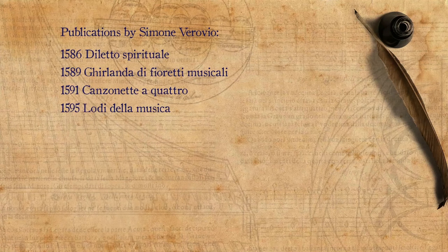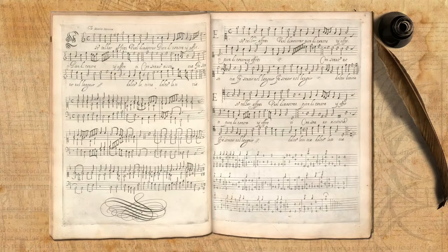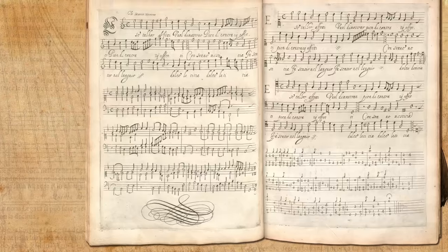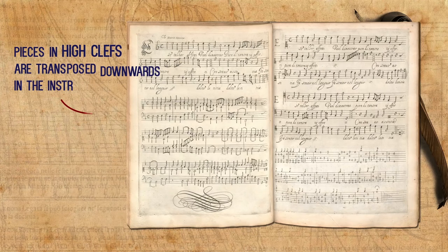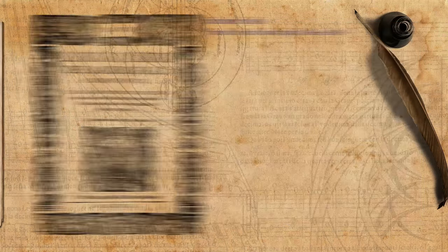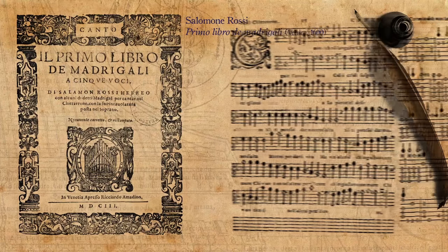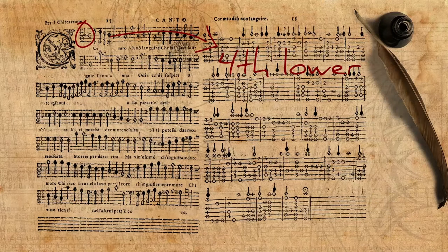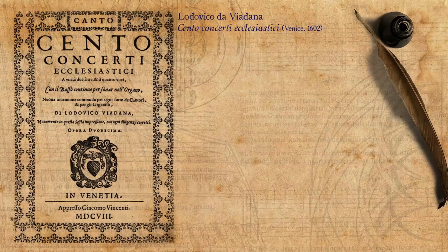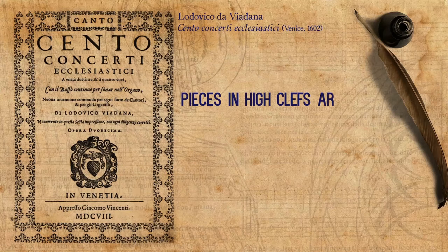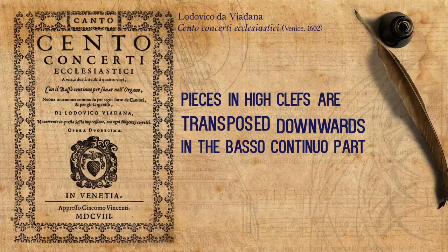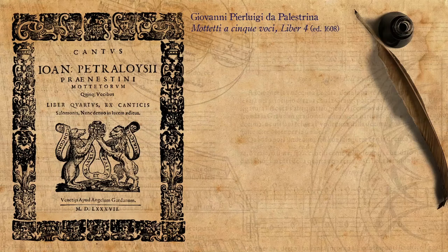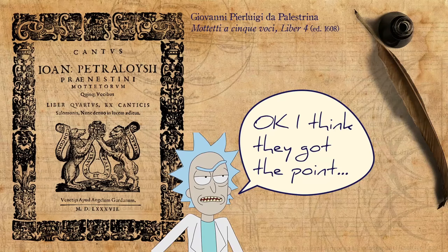For a cappella singing the notated pitch is not so important, as one may choose the most comfortable pitch for the voices at hand. When singing along with instruments, however, as became increasingly common towards the end of the century, it was critical to make sure that the performance pitch is comfortable for the singers. Between 1586 and 1595, Simone Verovio published several prints that, in addition to the sung parts, included also intabulations for harpsichord and lute. Excluding few exceptions, the pieces in high clefs are transposed downwards in the instrumental intabulations. The same is found in Salomone Rossi's first book of Madrigals from 1600, where the additional chitarrone intabulation is written a fourth lower than the voice parts. Two years later, in Viadana's famous Concerti Ecclesiastici with basso continuo, the pieces in high clefs are transposed downwards in the basso continuo part. In the 1608 edition of Palestrina's fourth book of Motets, where a basso continuo part was added, we again find that pieces written in high clefs are transposed downwards in the basso continuo part.